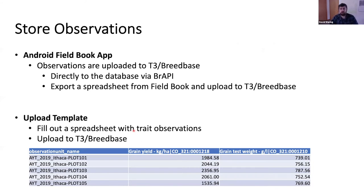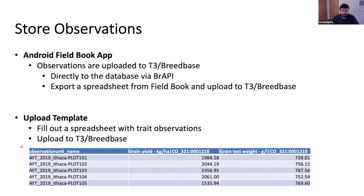Once you have your observations recorded, you want to store them in the database. In the Android Fieldbook app, observations can be uploaded directly to T3 via BrAPI, or you can export a spreadsheet from the Fieldbook app and upload that file to the website. If you're not using the Fieldbook app, you can upload observations using a simple Excel template — one column with all plot names and a column for each trait with values listed. You fill out this template and upload it to T3 and all observations will be stored with the correct trials. You can have multiple trials in the same file and upload them all at once.